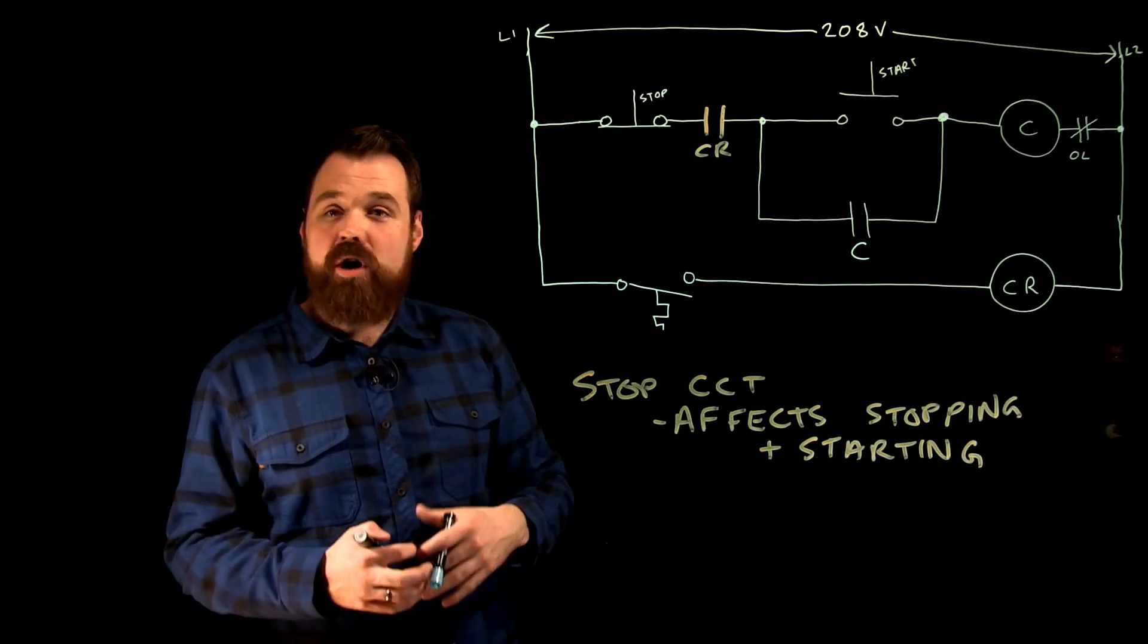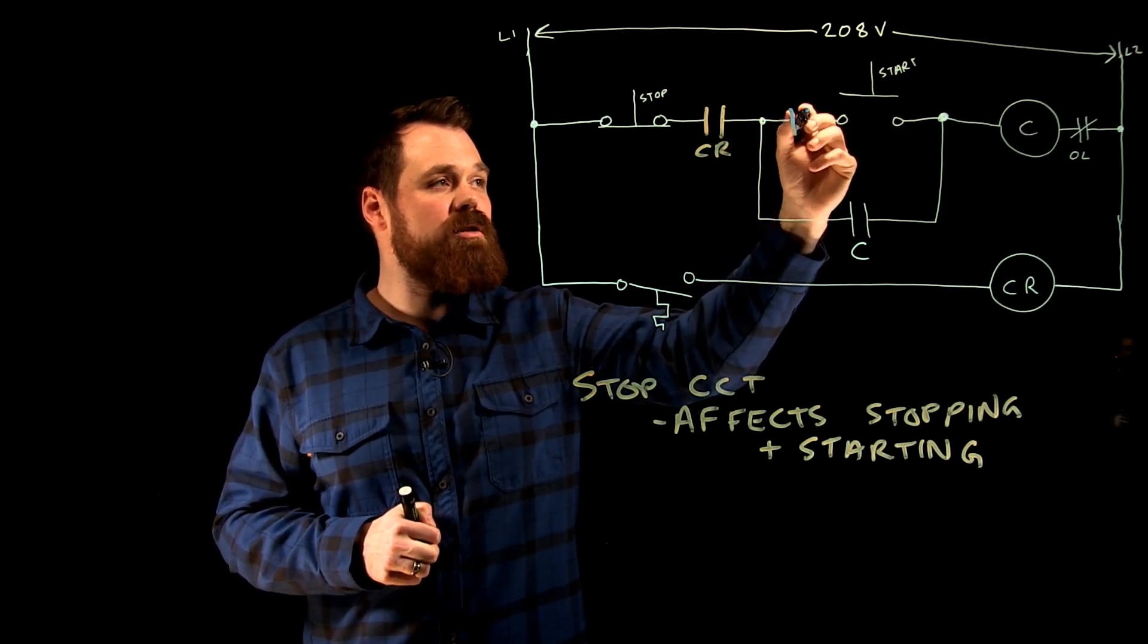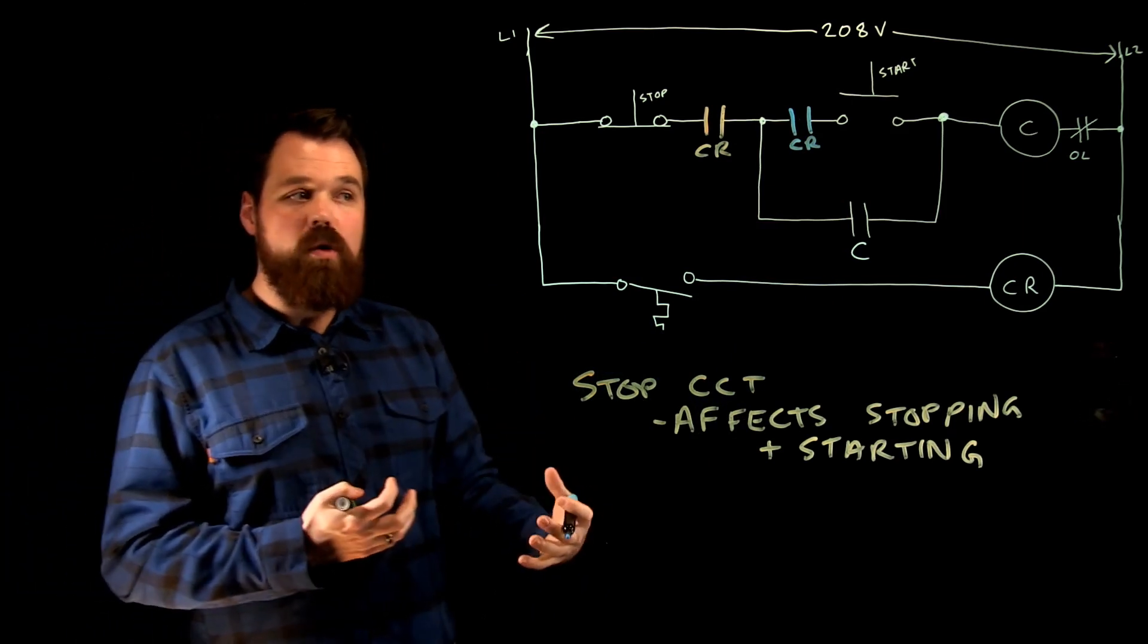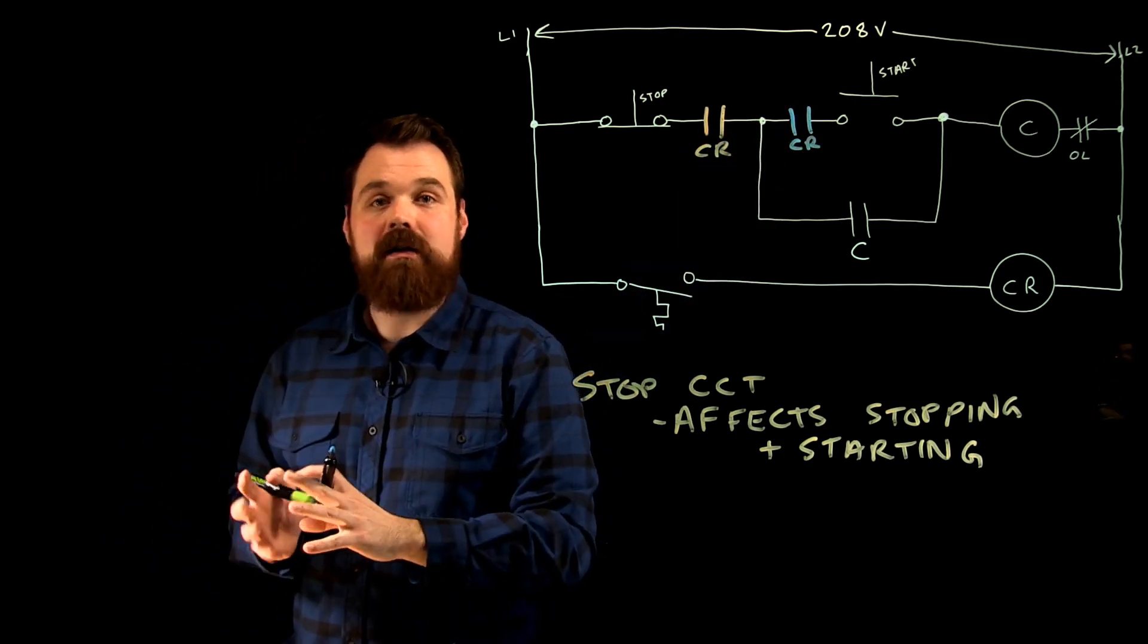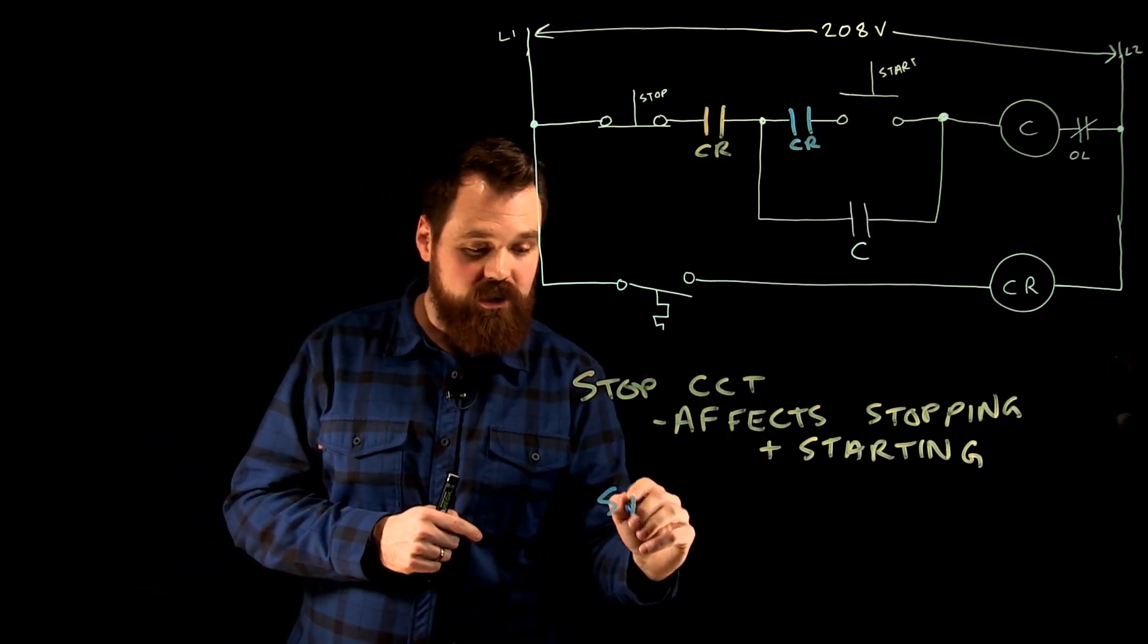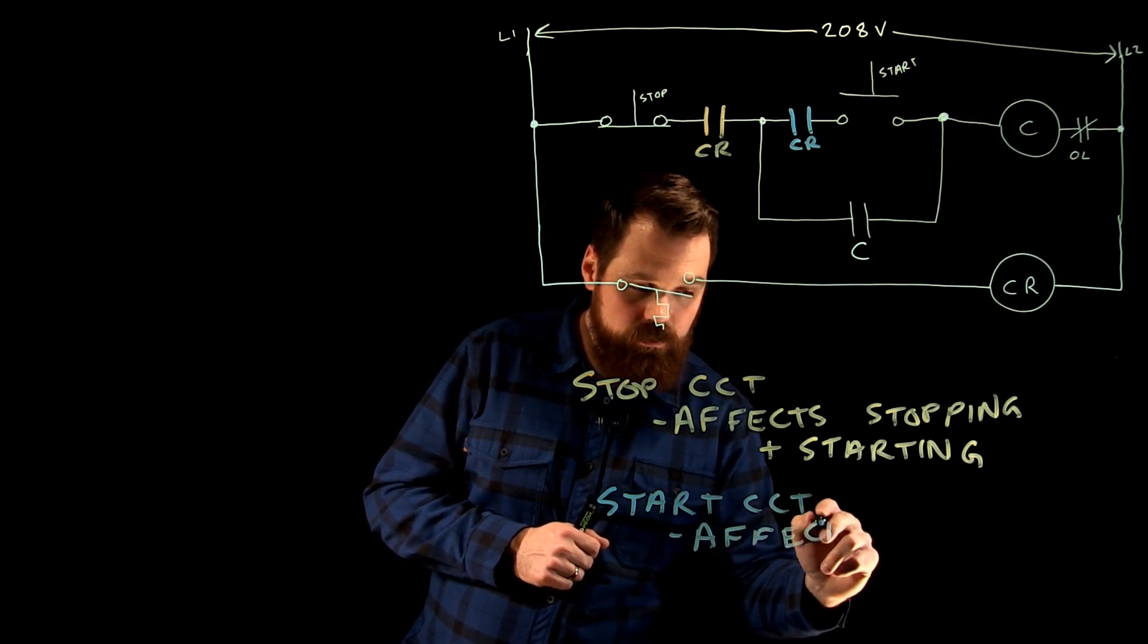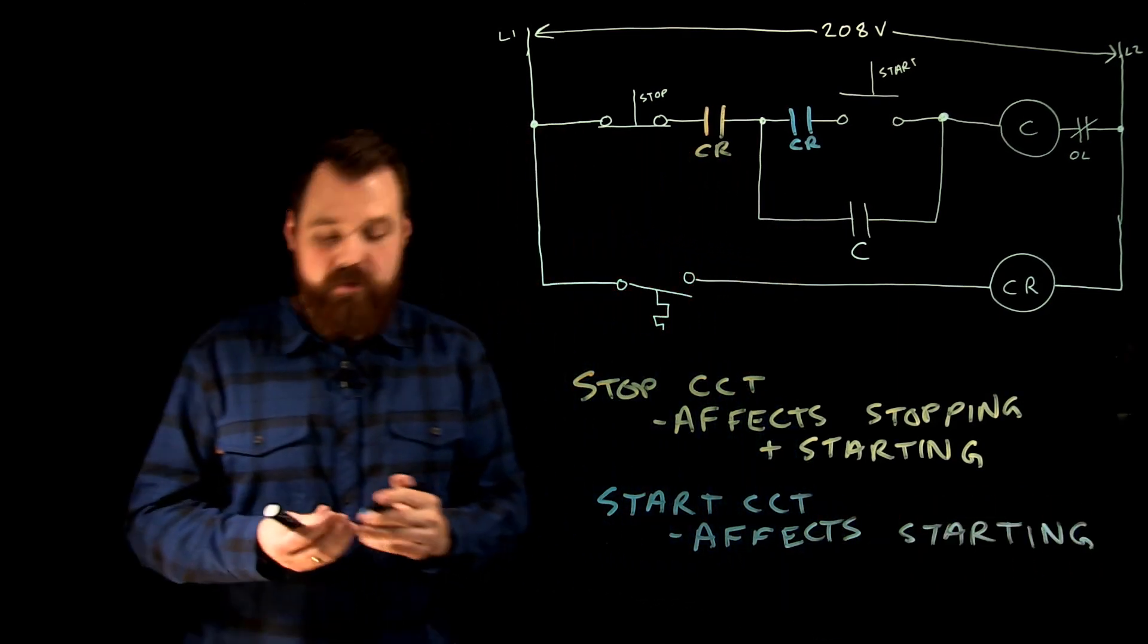Next thing we could do is we could take a set of contacts and we can install it in the start circuit. So if we were to put that right here, just in series with the start button, the only thing that this would affect would be the starting of the motor. So when this set of contacts is open, it just prevents us from starting the motor. But if it's already running, it's going to continue to run. We don't stop the motor. So whenever we put a set of contacts in the start circuit, it really just affects the starting of the motor.